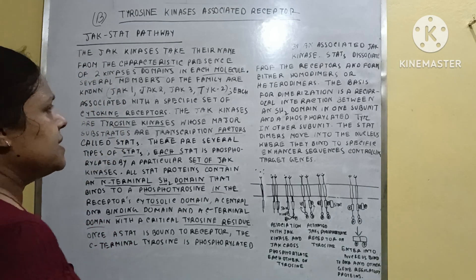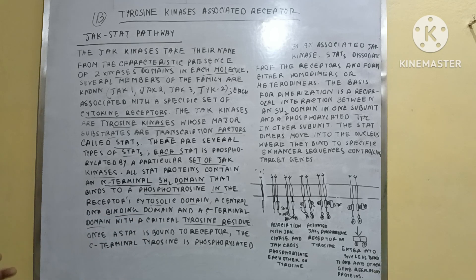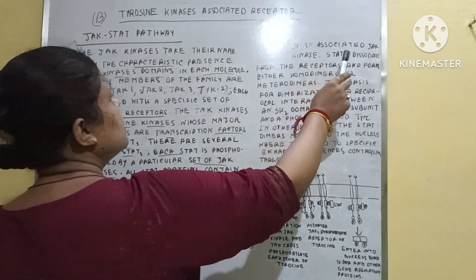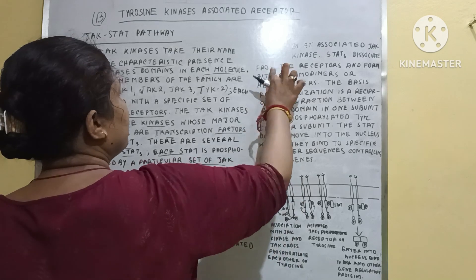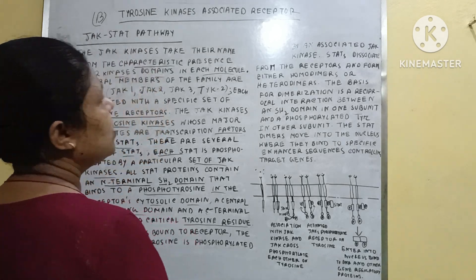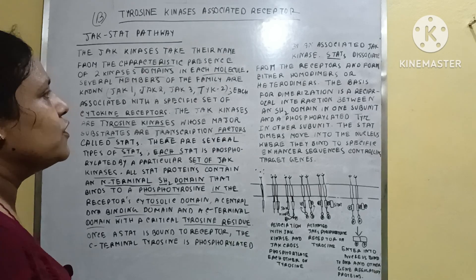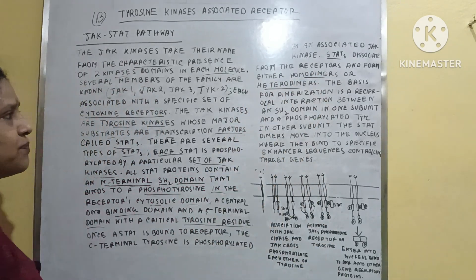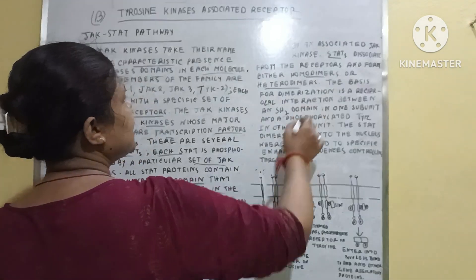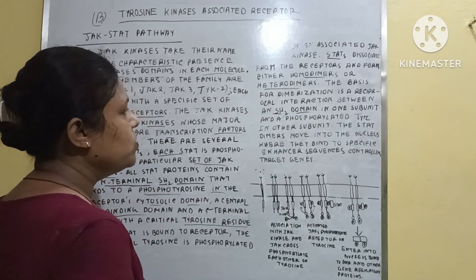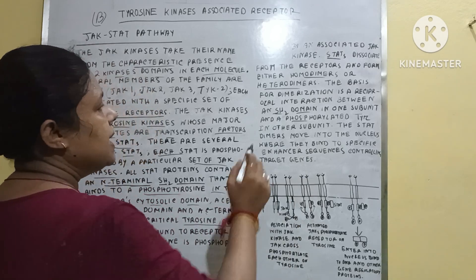Phosphorylation of STAT occurs by an associated JAK kinase — without the JAK kinase, the STAT does not become activated. After activation, the STATs dissociate from the receptors and form either homodimers or heterodimers.